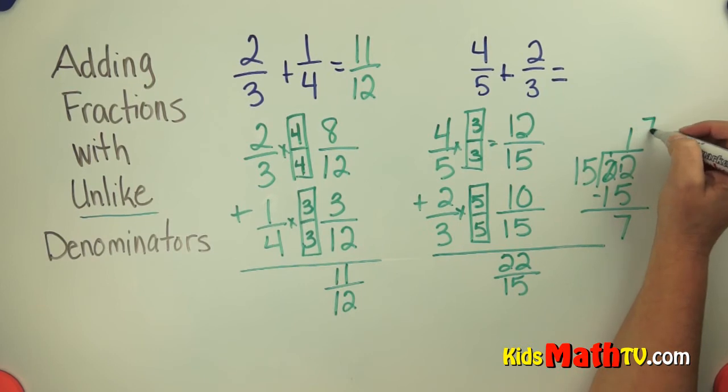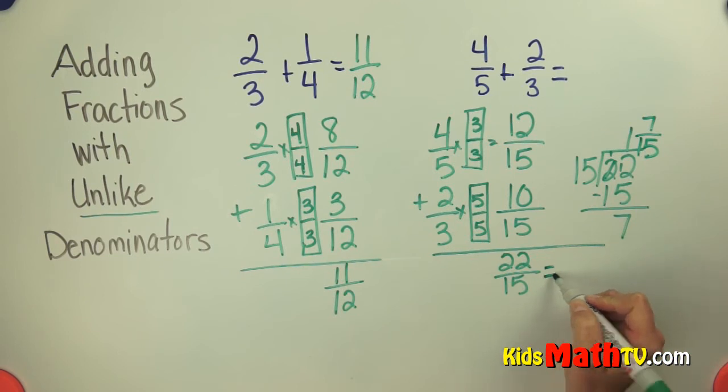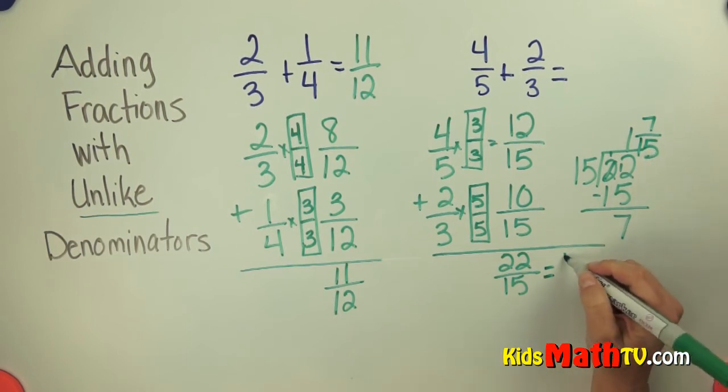This remainder becomes my numerator. The denominator is the divisor. So 22 fifteenths, renamed as a mixed number, is 1 and 7 fifteenths.